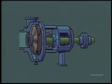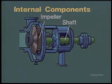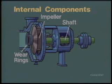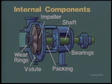Centrifugal pumps have six main internal components: the pump shaft, the impeller, wear rings, the volute, packing or mechanical seals, and bearings.